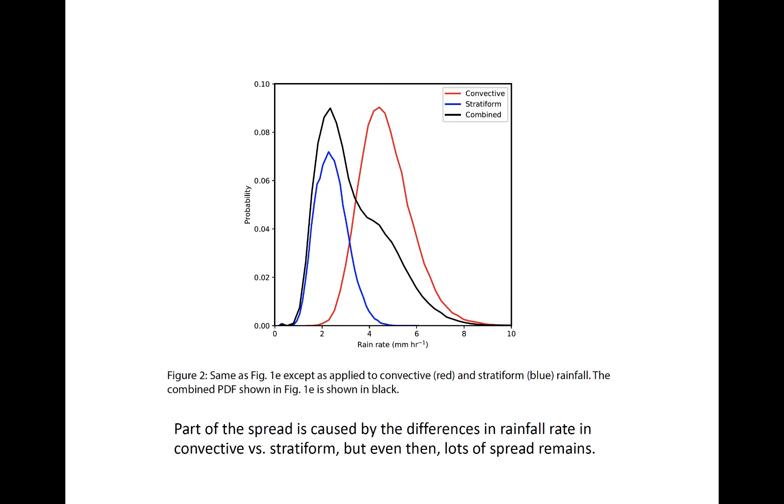Stratiform rainfall at 30 to 31 dBZ, denoted by this blue line, typically rains within a range of about one to four and a half millimeters per hour.